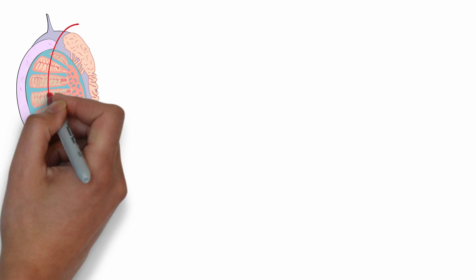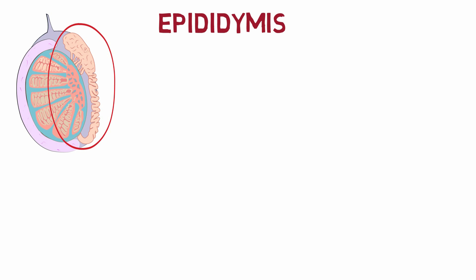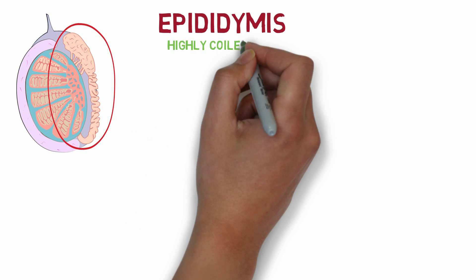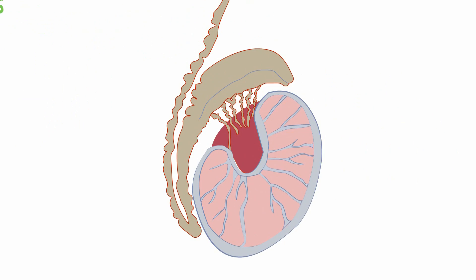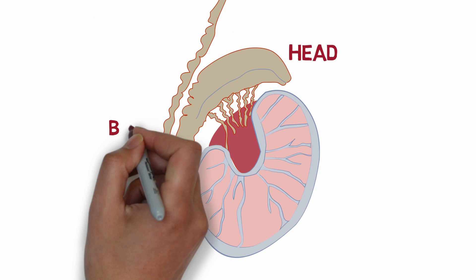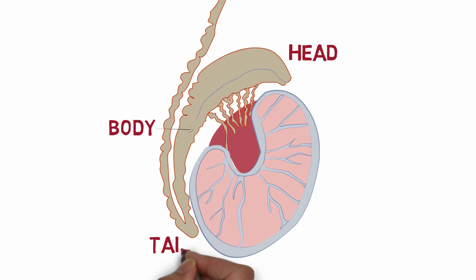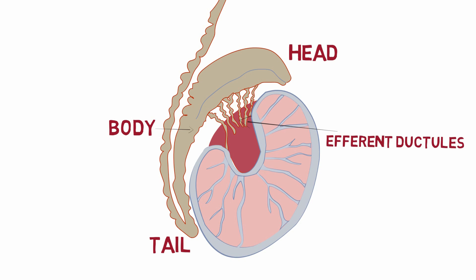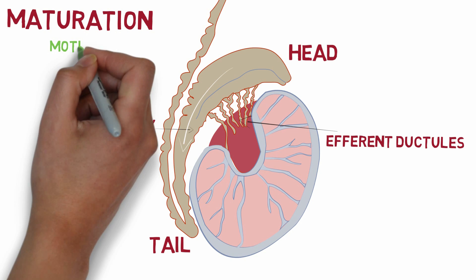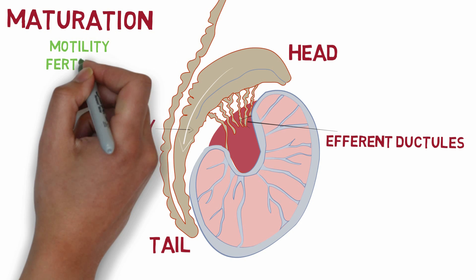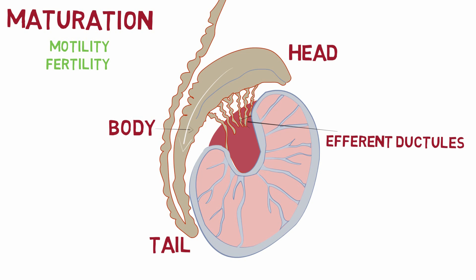Now let's talk about the next internal reproductive organ, the epididymis. The epididymis is a highly coiled tube-like structure which connects the testes to the vas deferens. It is made up of three parts: the head, the body, and the tail. The immature sperms produced in the seminiferous tubules pass to the epididymis via the efferent ductules. These immature sperms travel towards the tail of the epididymis and undergo maturation, during which they become mature and gain properties like motility and fertility.